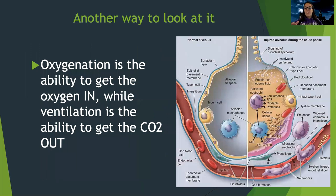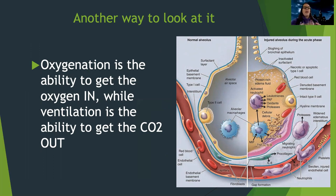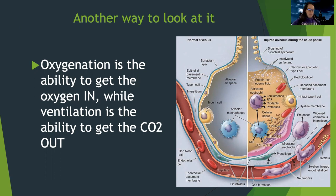This picture illustrates what we were talking about — all that junk that can be in the lungs. If I'm full of fluid or bacteria, and there's inflammation down in that gas exchange sac, then I'm going to have a lot of problems getting oxygen in and CO2 out. To sum up: oxygenation is the ability to get oxygen in; ventilation is the ability to get CO2 out.